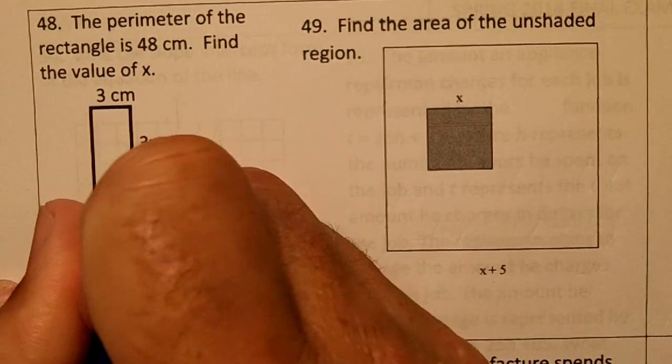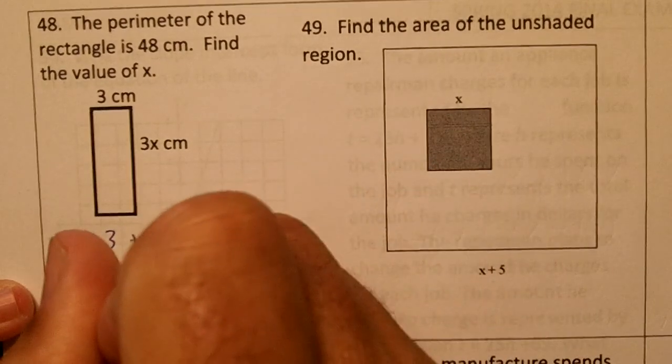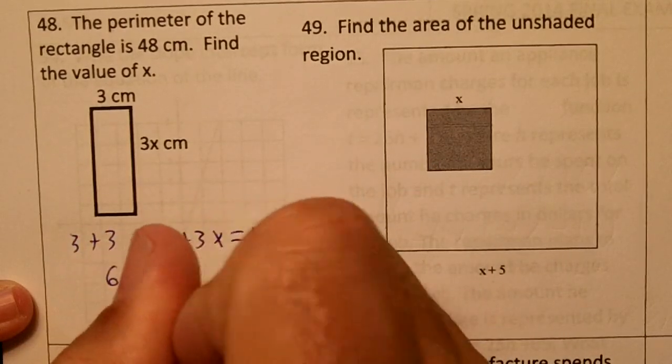3 plus 3 plus 3x plus 3x equals 48. 6 plus 6x equals 48.